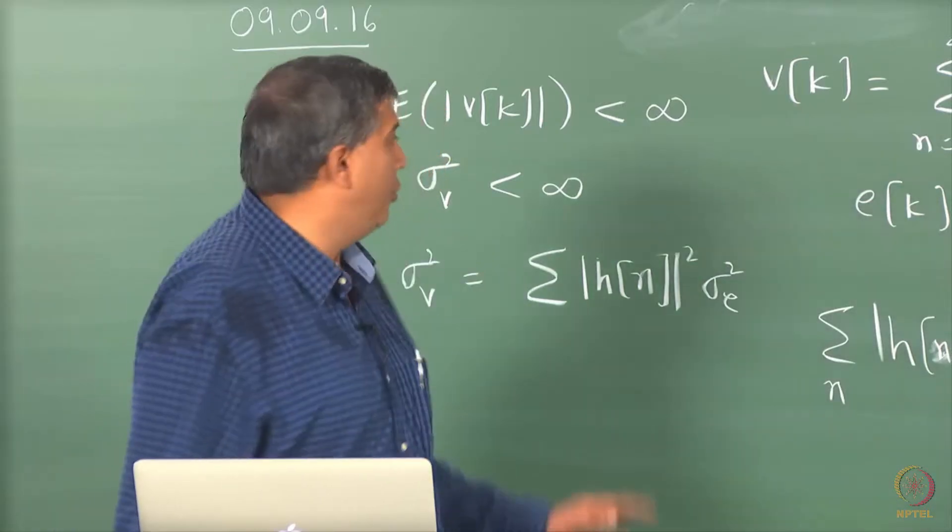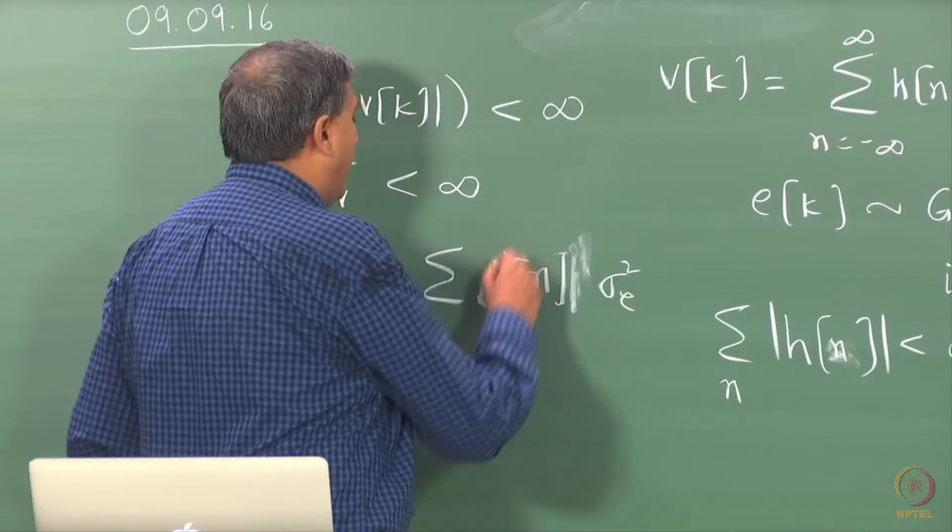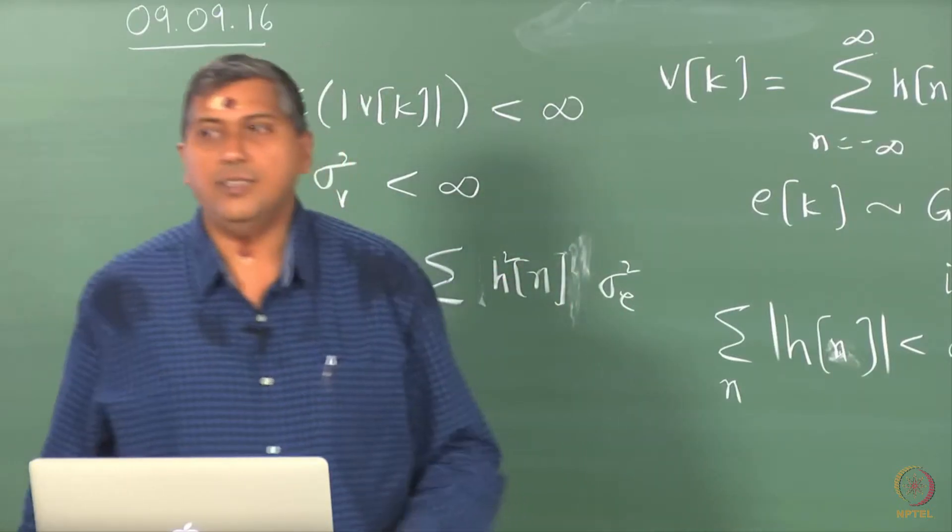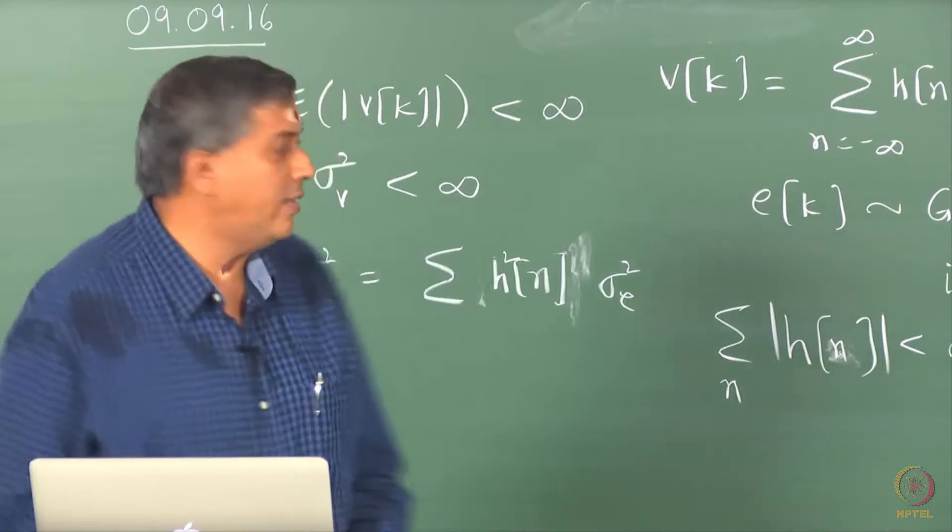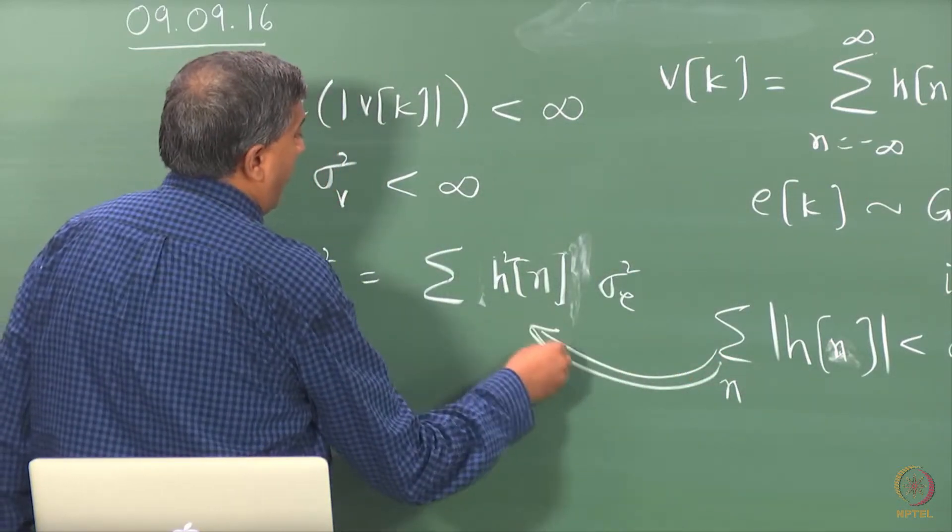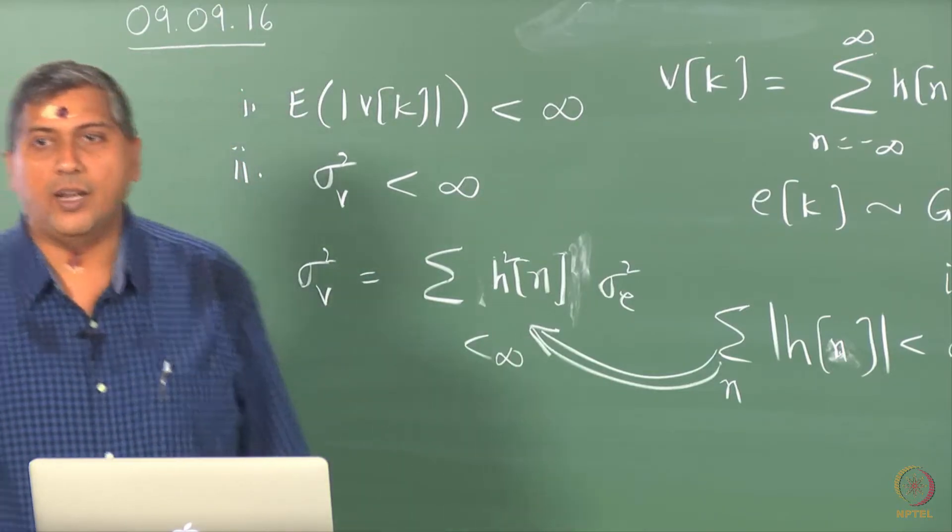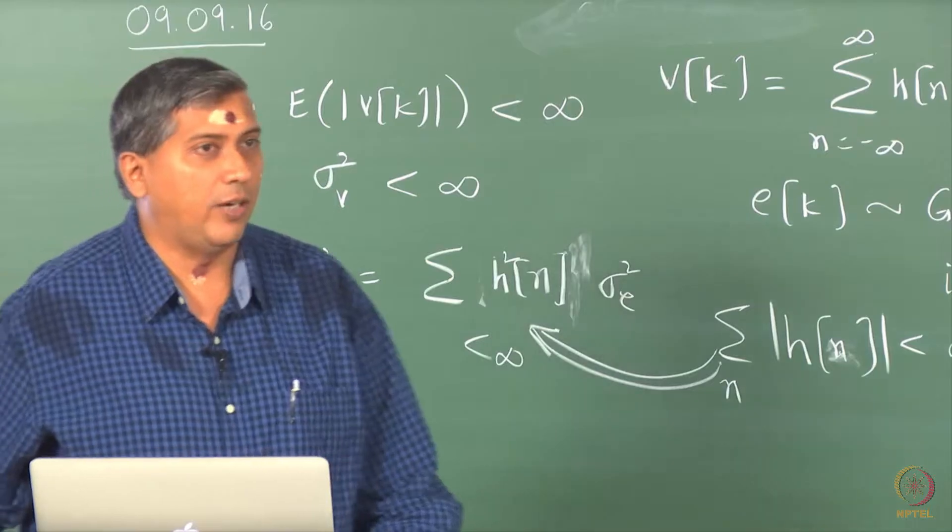In fact, I do not even need to use the magnitude here because it is going to be squared and we are only anyway dealing with real valued sequences here. So this implies the convergence of this sequence but not the other way around, right?